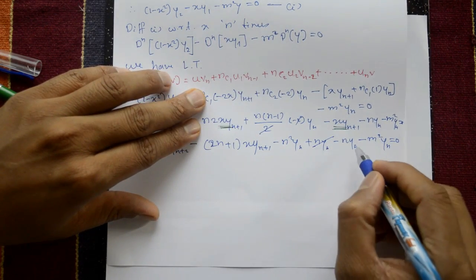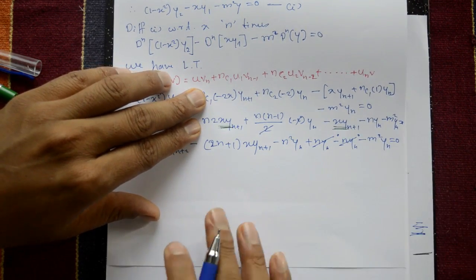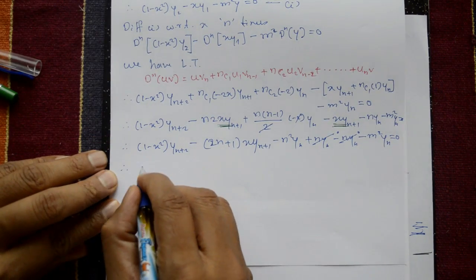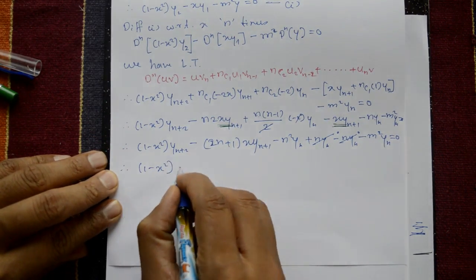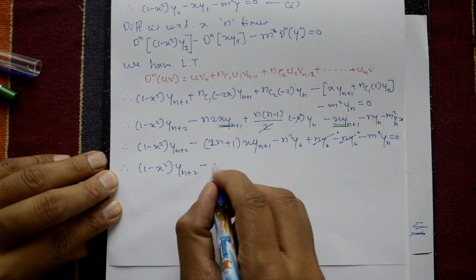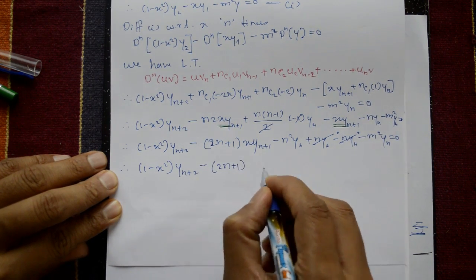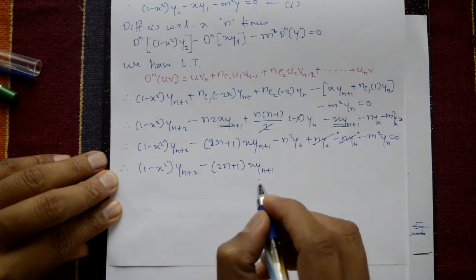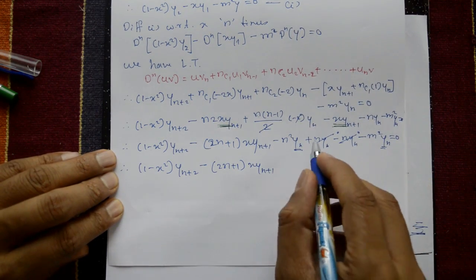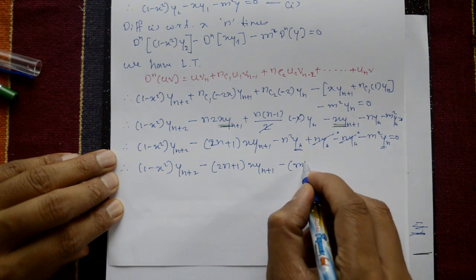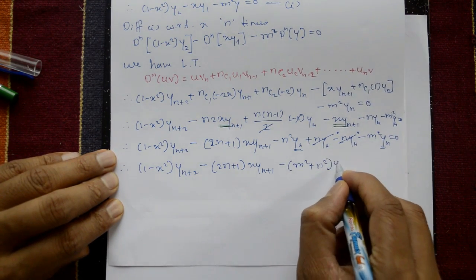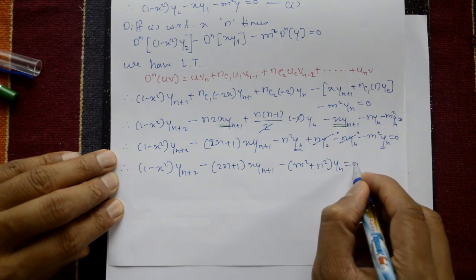Plus minus get cancelled. Therefore, 1 minus x square · y_{n+2} minus of 2n plus 1 into x·y_{n+1}, and y_n common, minus is common, minus m square plus n square into y_n equal to 0. This is the required solution.